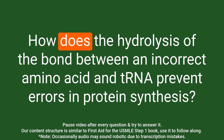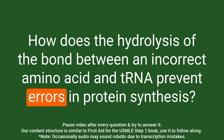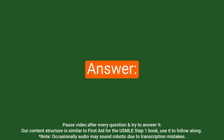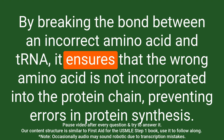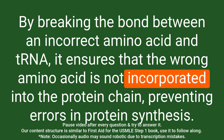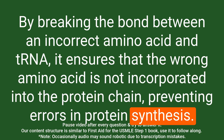Question: How does the hydrolysis of the bond between an incorrect amino acid and tRNA prevent errors in protein synthesis? Answer: By breaking the bond between an incorrect amino acid and tRNA, it ensures that the wrong amino acid is not incorporated into the protein chain, preventing errors in protein synthesis.